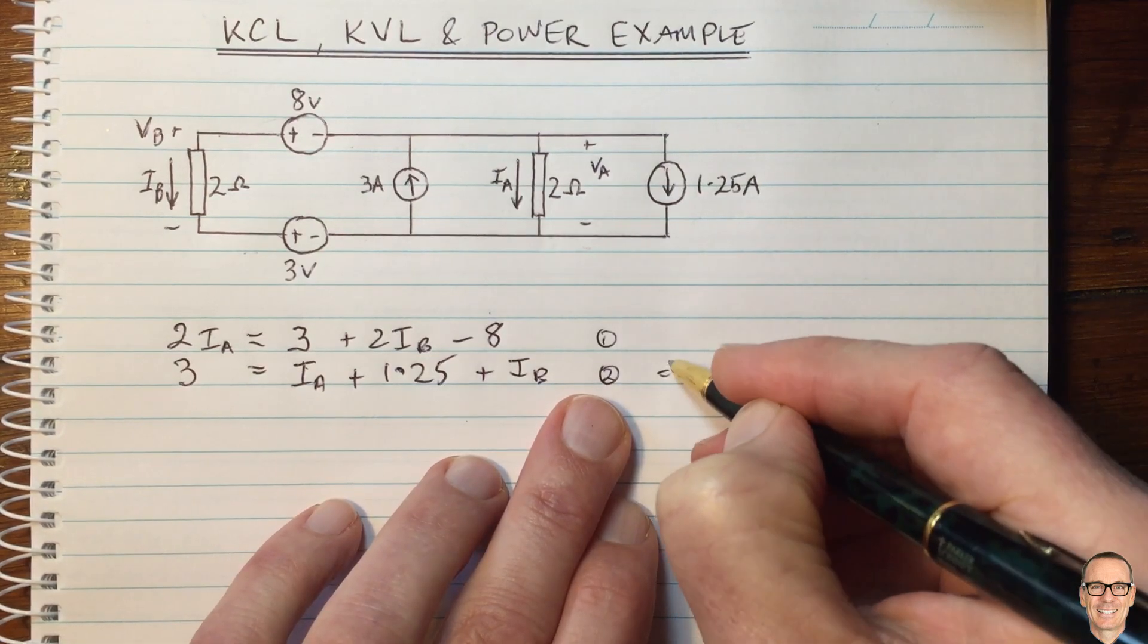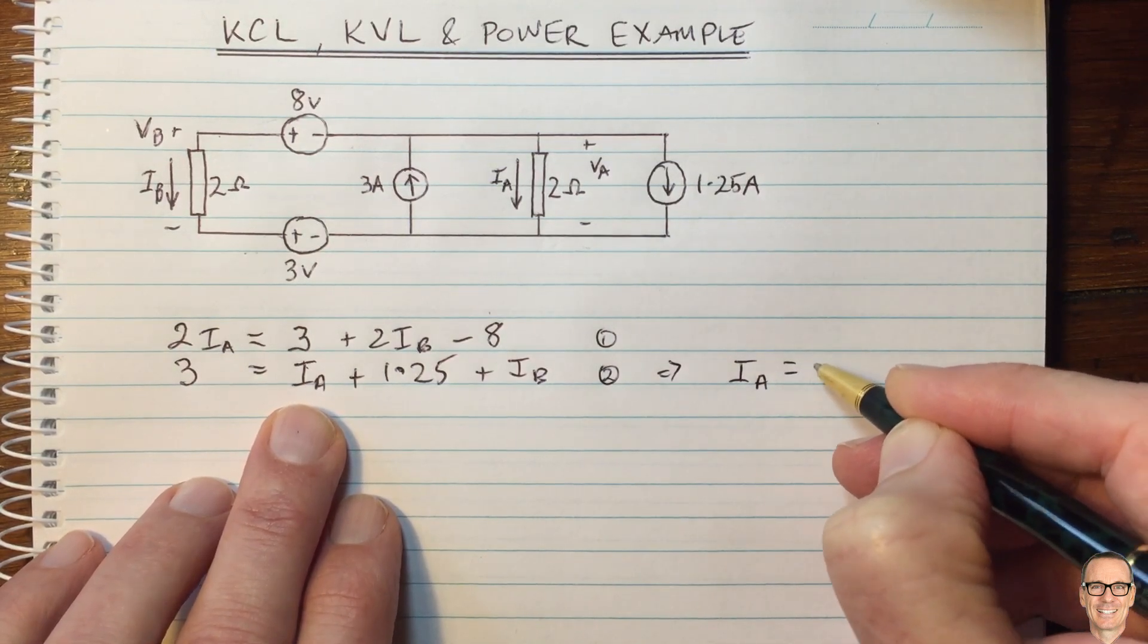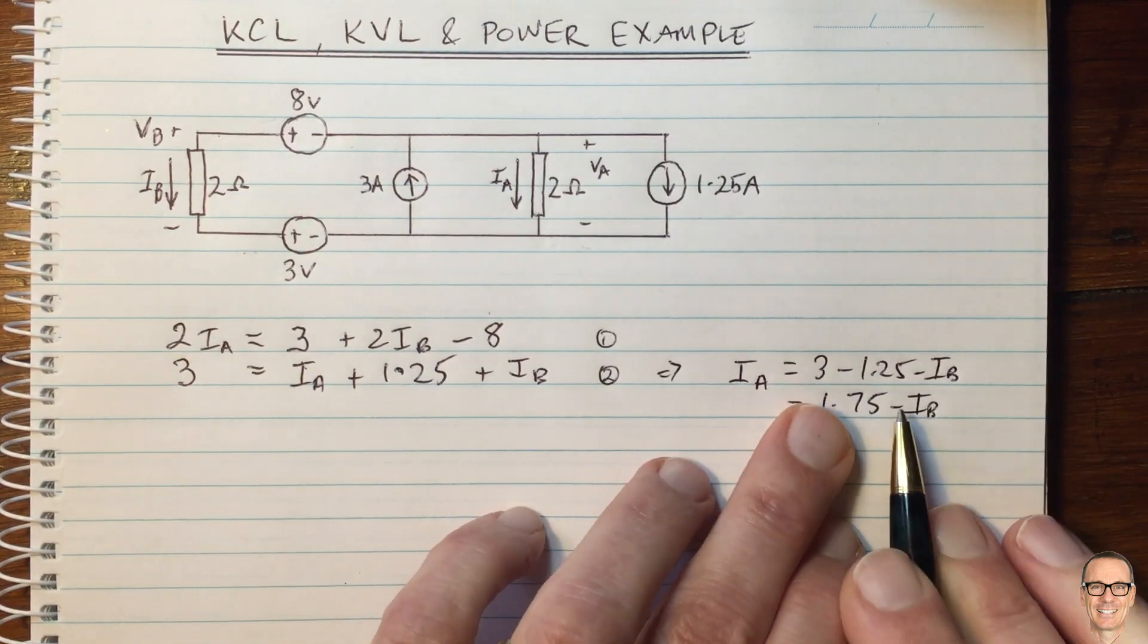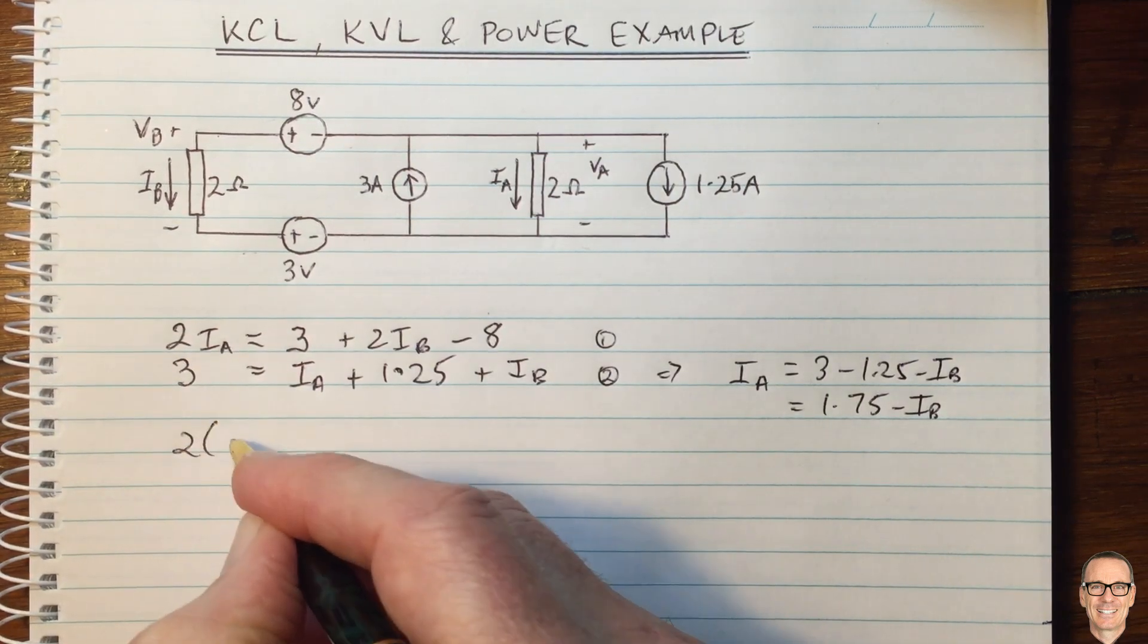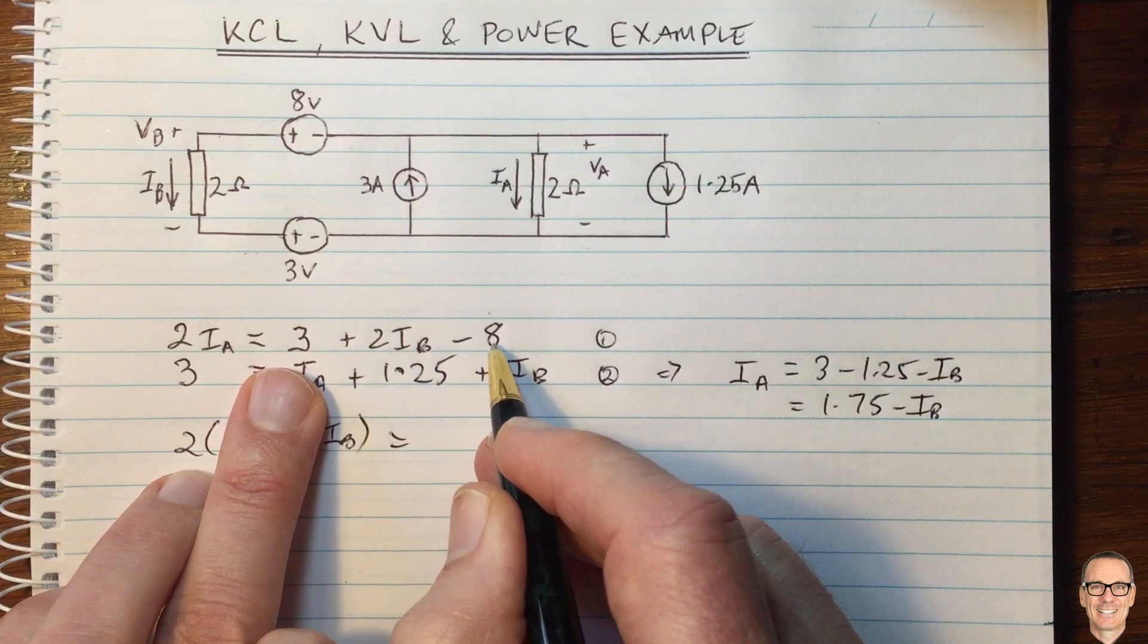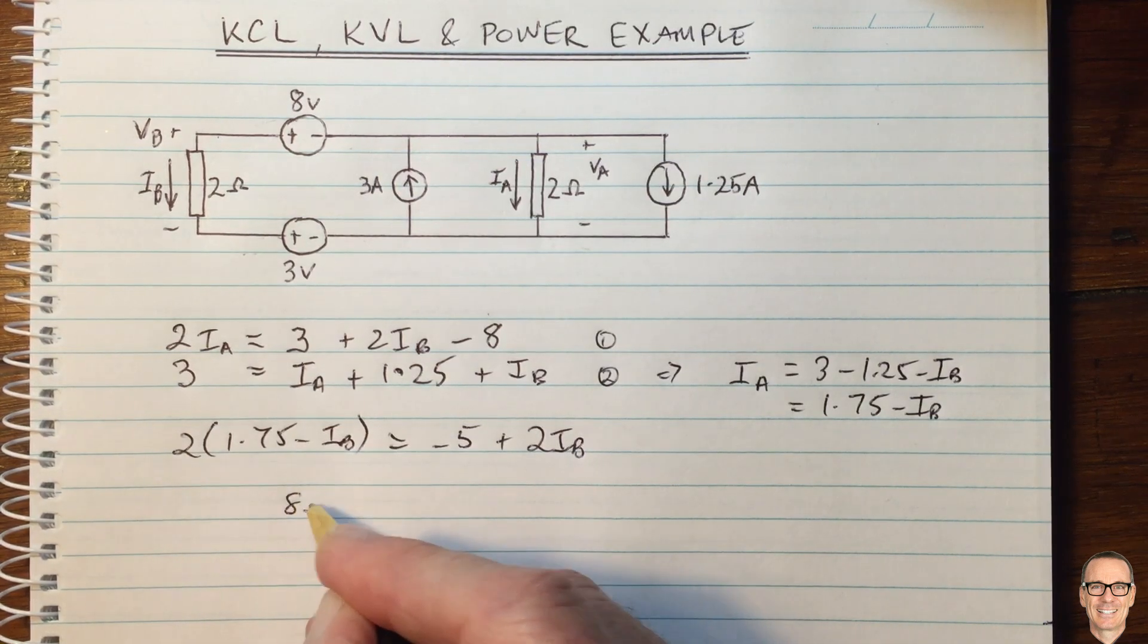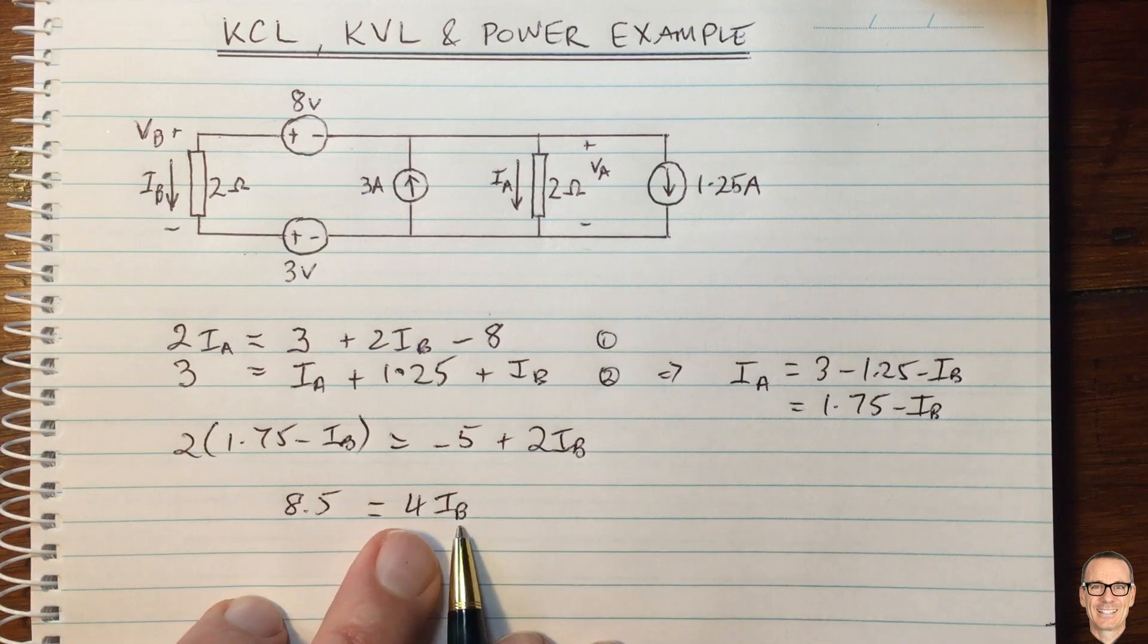And so equation 2 implies that we can get an expression for IA just by rearranging. So IA is equal to 3 minus 1.25 minus IB. And then that equals 1.75 minus IB. And now if we substitute that for IA into the first equation, we're going to get 2 times 1.75 minus IB equals 3 minus 8. So that equals minus 5 plus 2 IB. And then we can solve that. We've got then multiplying this out, adding the 5. We see that is 8.5 equals 4 times IB. Because we've got 2 times IB plus the 2 times here. On the right-hand side, we get 4.